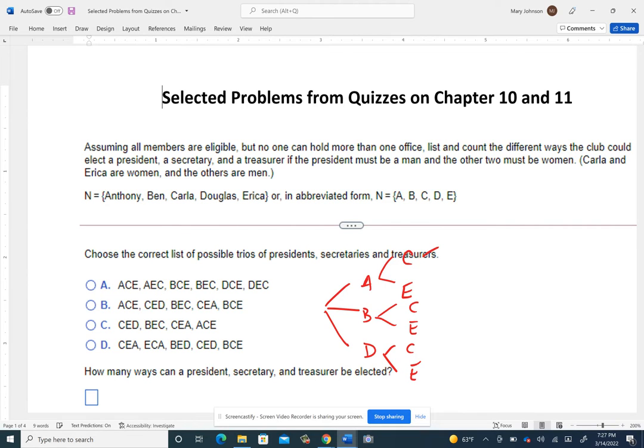Now, when I go on and choose the treasurer, if I've selected Carla to be the secretary, then Erica has to be the treasurer, and vice versa. So I can go in and get that position selected on all of these. So I have A, C, E, A, E, C. B, C, E, B, E, C, D, C, E, and D, E, C.